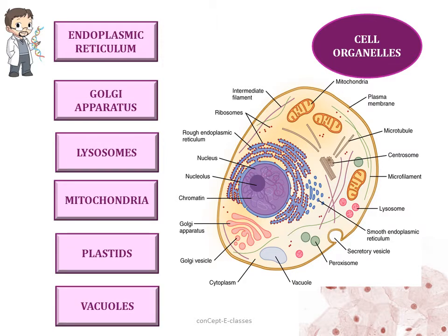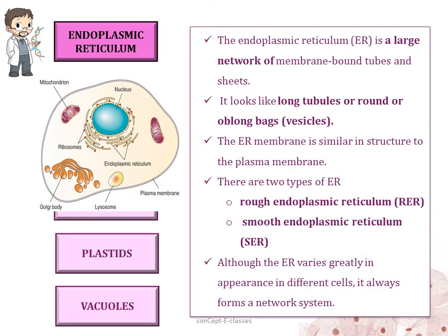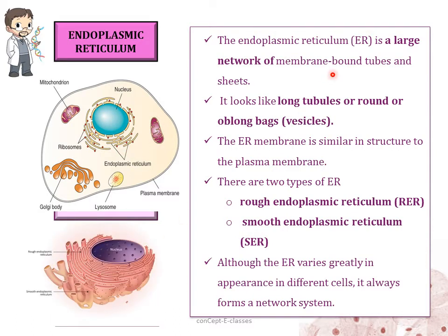The first organelle we will study is the endoplasmic reticulum. The endoplasmic reticulum is a large network of membrane-bound tubes and sheets. It looks like long tubules or round or oblong bags called vesicles, and they extend from the nuclear membrane to the plasma membrane. The endoplasmic reticulum is similar in structure to the plasma membrane. There are two types: rough endoplasmic reticulum and smooth endoplasmic reticulum, and although it varies in appearance in different cells, it always forms a network system.